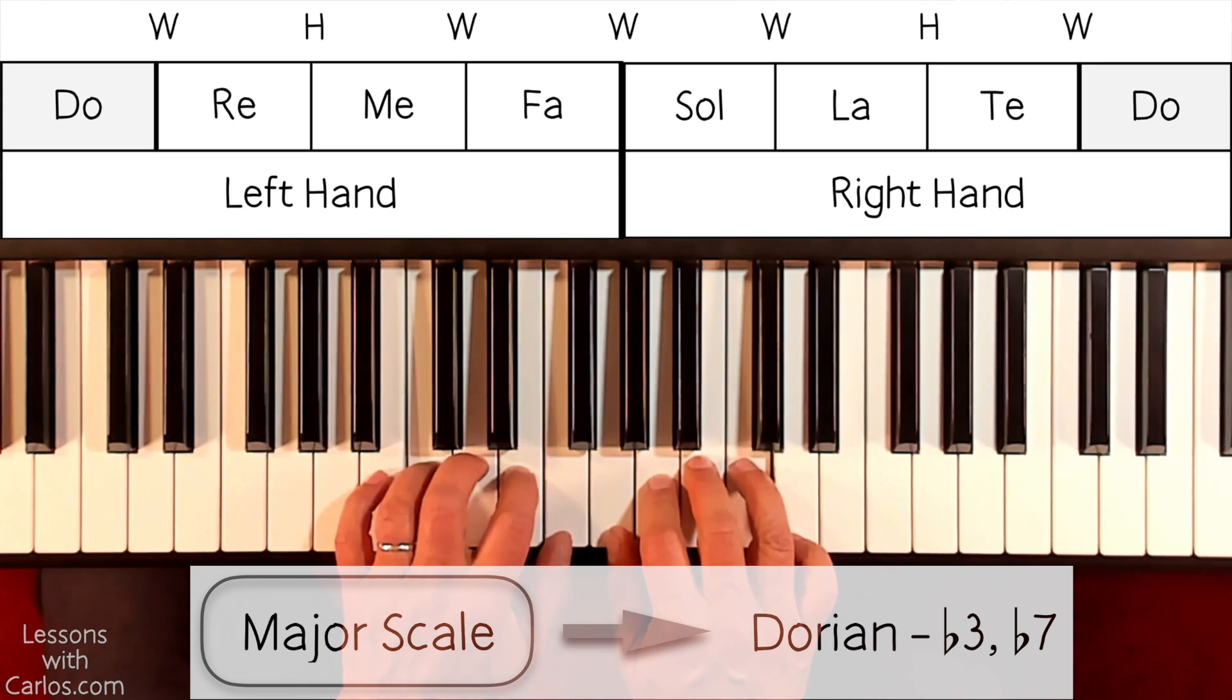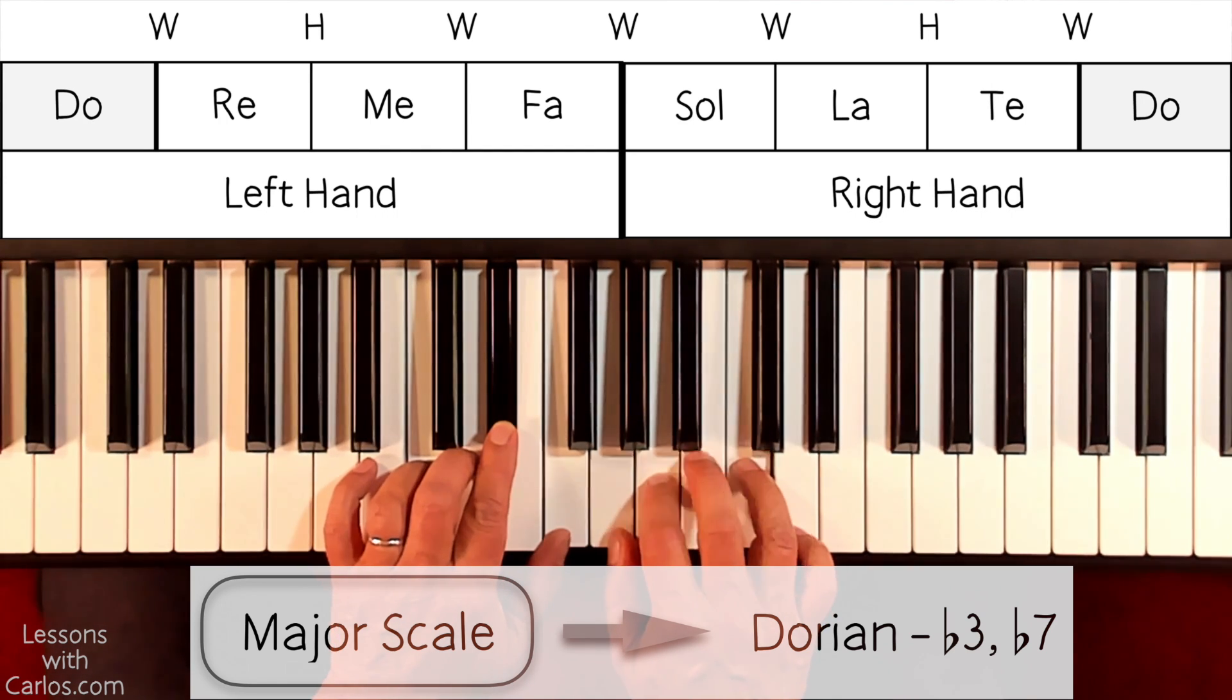Our third degree is going to become a flat 3, and our major 7 is going to become a minor 7 or flat 7.